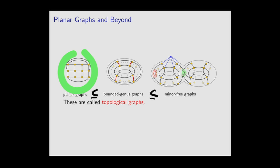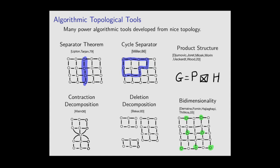We call these topological graphs. The study of algorithms for planar graphs started with the work of Lipton and Tarjan in '79, a very long time ago. Over the last couple of decades, a lot of algorithmic tools have been developed stemming from the topological structure of planar graphs. There are a lot of these tools — even if they don't all make sense to you, that's fine. The main point is: there are a lot of them, and they solve a lot of problems.